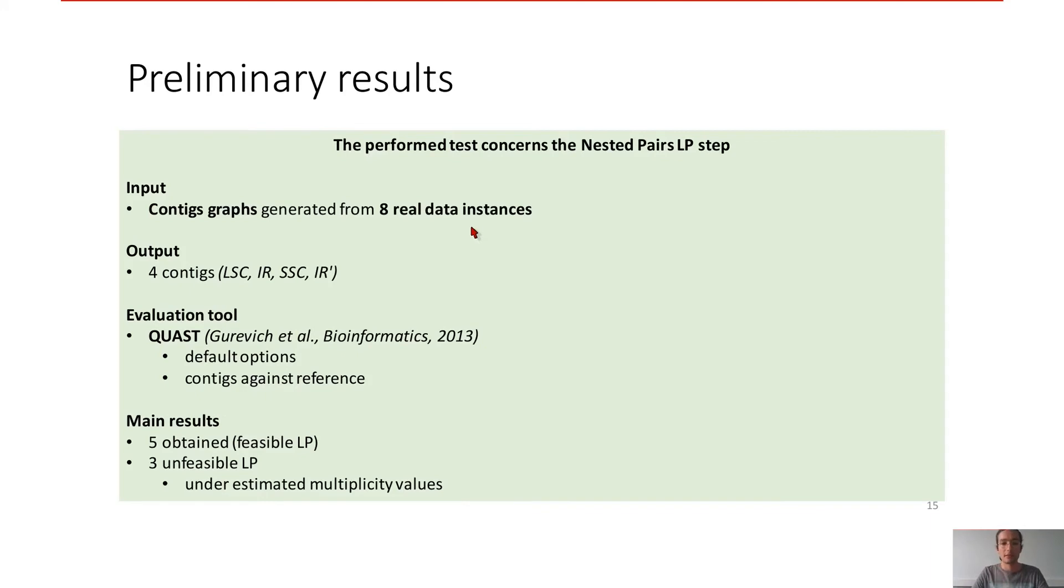So in order to test our approach, we get some preliminary results. And I have to tell you that all the performed tests for now concerns only the nested pairs LP step and not the contigs and links generation. As inputs, we have contigs graphs generated from eight real data instances. As outputs, four contigs normally representing the four regions. And we evaluate our approach thanks to Quast with default options.